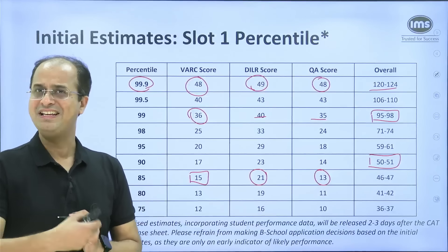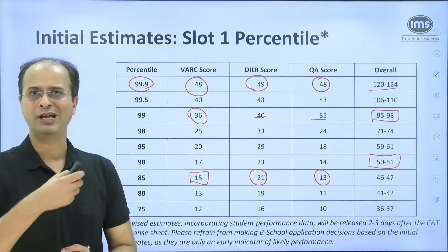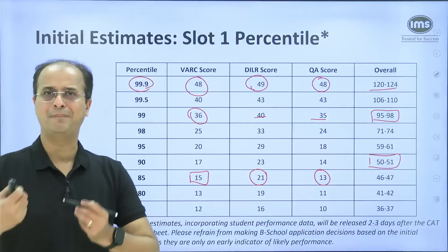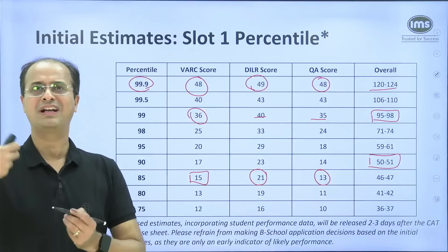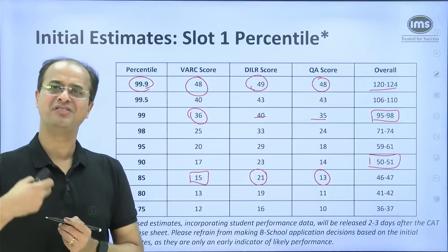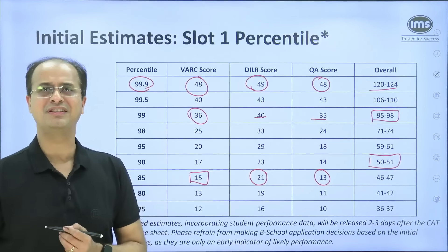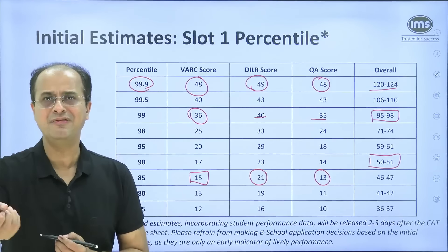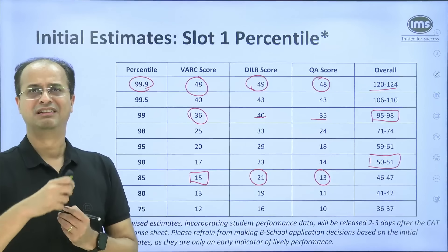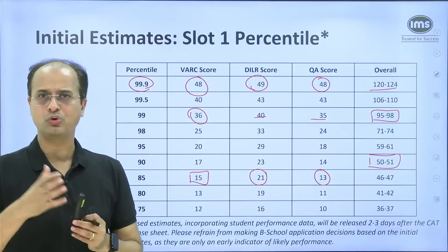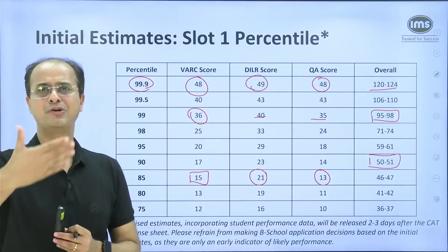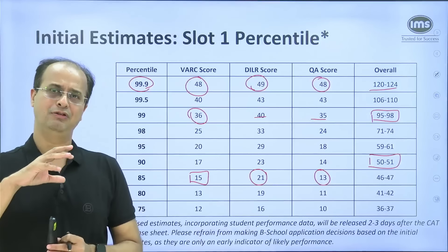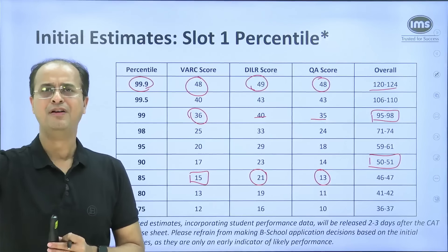Please remember these are our initial estimates, and we are talking about raw scores. Slot 1 students typically face a surprise — they are the first to know about the higher number of questions in DILR and the absence of para jumbles in VARC. Because of this surprise factor, their scores tend to get upscaled during normalization. So the raw score performance for Slot 1 is typically a little lower compared to Slot 2 and Slot 3, assuming a similar difficulty level. I will not be surprised if scores for each section get scaled up for Slot 1.